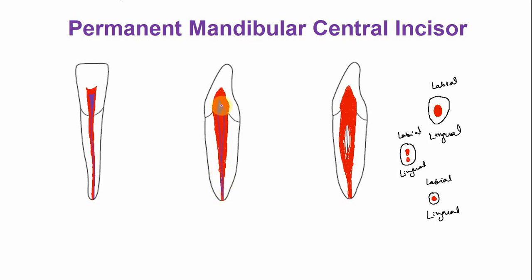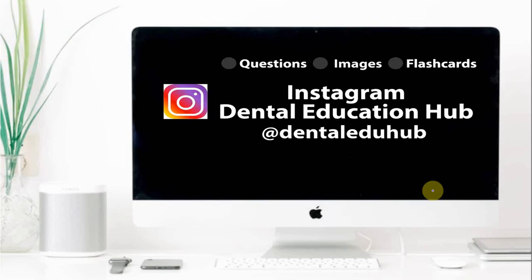The purple color indicates the pulp chamber and the canal in an older adult — the color is just an indication. Similarly, there is also reduction at the cervical portion and in the apical one-third as well. So this is all about the endodontic anatomy of the permanent mandibular central incisor.